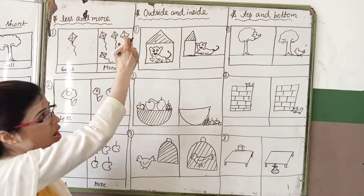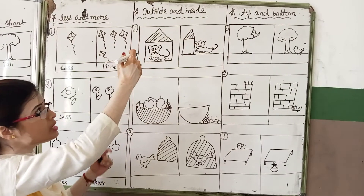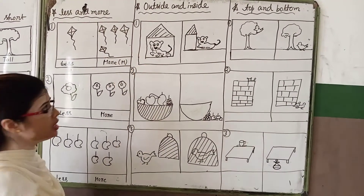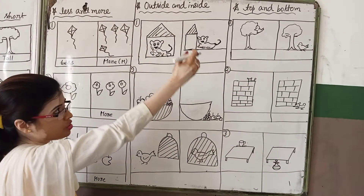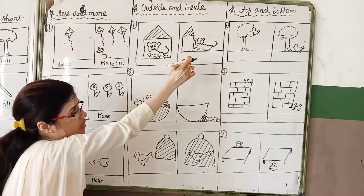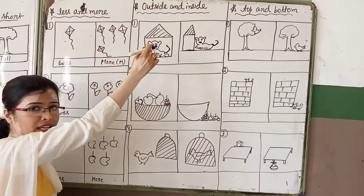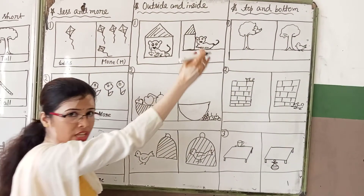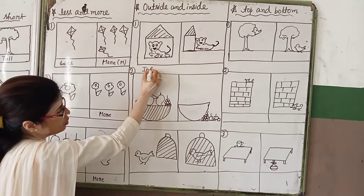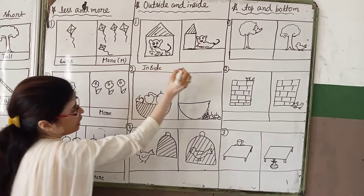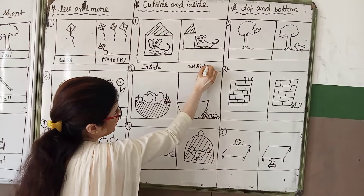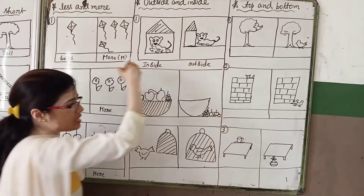Next difference: outside and inside. Outside means external position or external part, and inside means inside — inside the house and outside the house. Look at the picture: two dogs are there. One dog is inside the kennel and the second dog is outside the kennel. So here you can write inside and here you can write outside — dog is outside of the kennel and the dog is inside of the kennel.